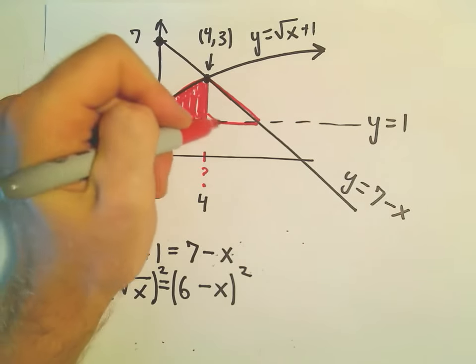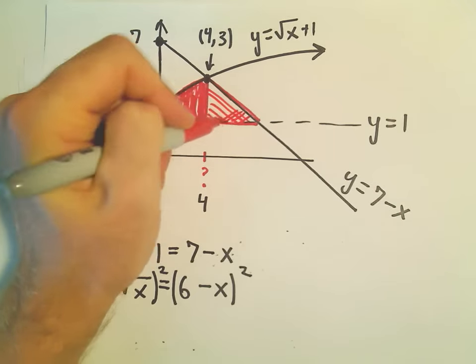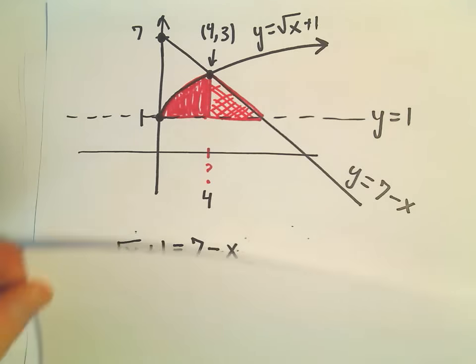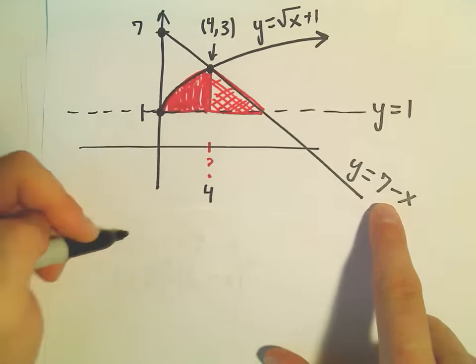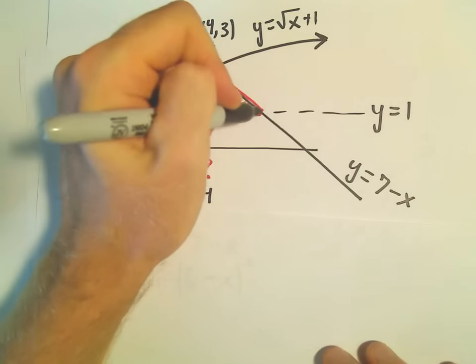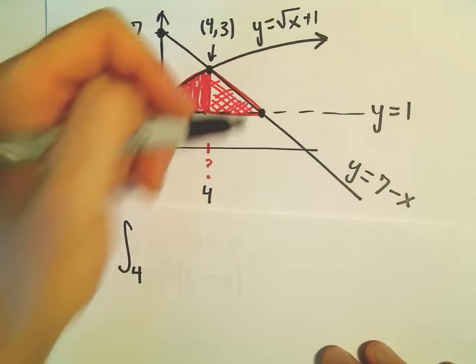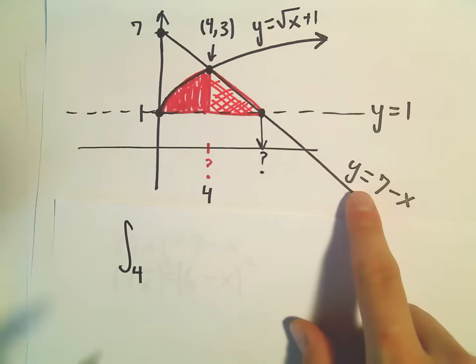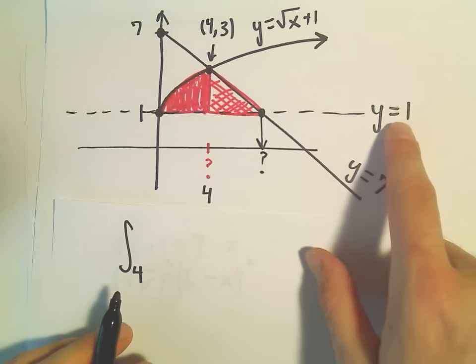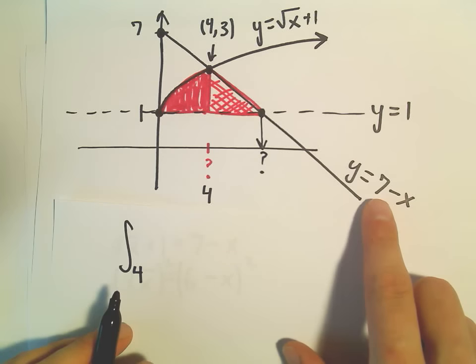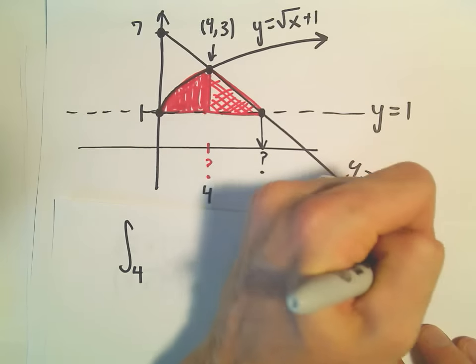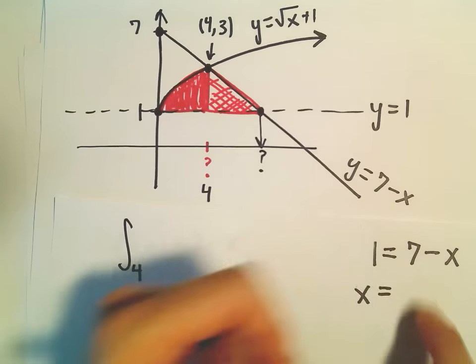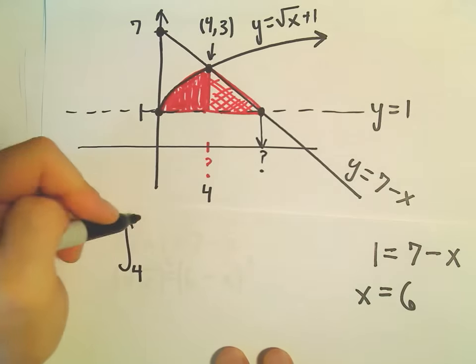What we'll have to do next is figure out the other part as well. To figure out the other part, we'll do the same thing. We'll take the top function, which is 7 minus x. And now we need to go up to this x coordinate, whatever that may be. We would have to figure that out. To figure that out, it's the intersection between the line y equals 1 and the line y equals 7 minus x. So if we set those equal to each other, we can add the x over, we can subtract the 1, and that would give us x equals 6.